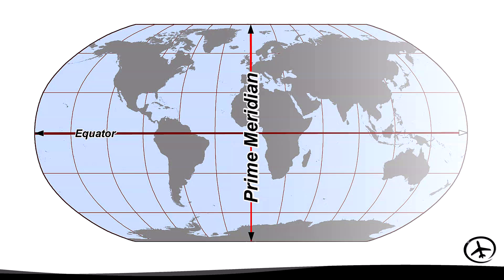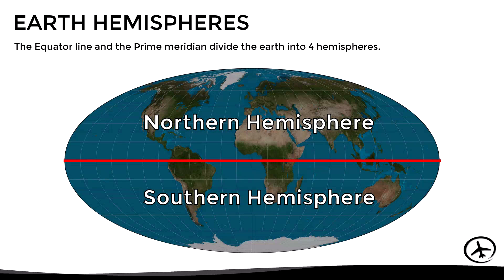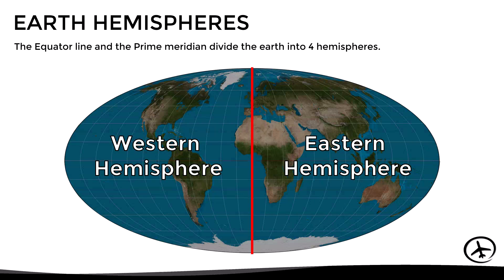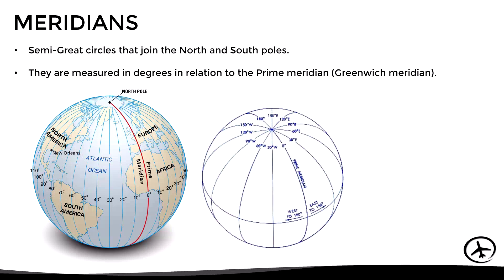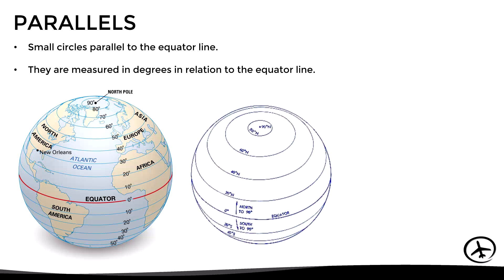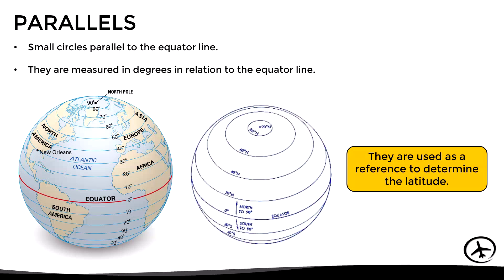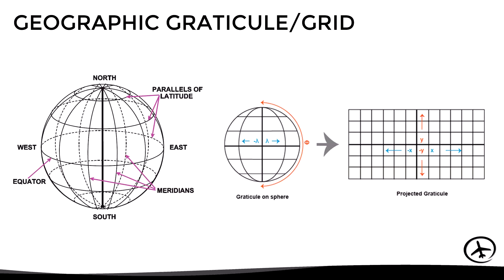These axes also divide the earth into four hemispheres: the equator line divides the earth into the northern and southern hemispheres, while the prime meridian divides it into the western and eastern hemispheres. Due to the size of the earth, it is common to use secondary reference lines known as parallels and meridians. Meridians are semi-great circles joining the north and south poles, measured in degrees relative to the prime meridian, and used as reference for longitude. Parallels are small circles parallel to the equator, measured in degrees relative to the equator, used as reference for latitude. The resulting grid is known as the geographic graticule.